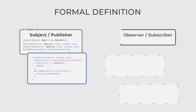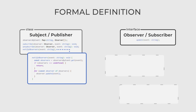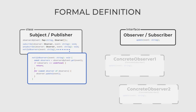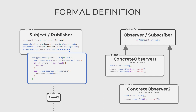The Observer or Subscriber is an interface that defines the Update method to be called when the subject's state changes. And lastly, ConcreteObservers are classes that implement the Observer interface and receive updates from the subject when its state changes.